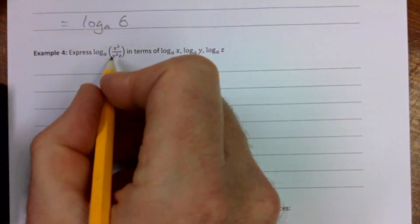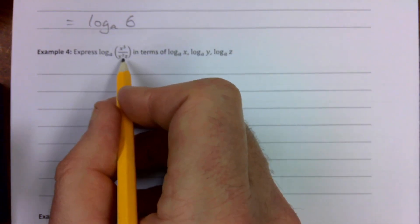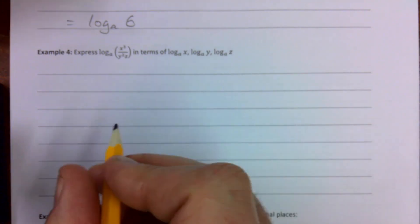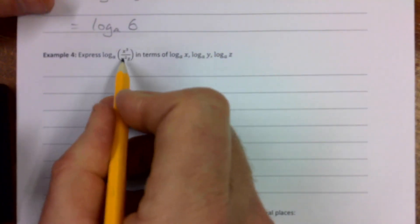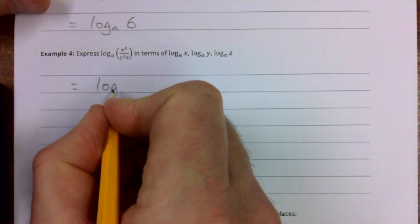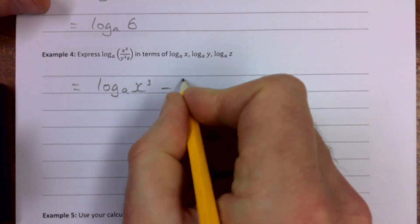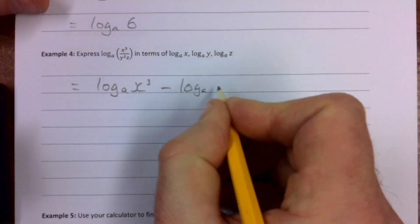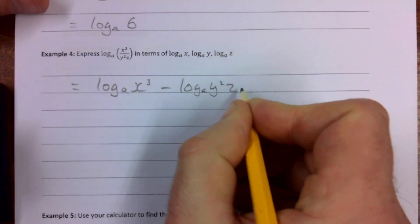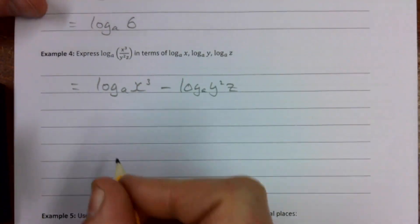Express log to the base a of x cubed over y squared z in terms of log to the base a of that. So let's start to separate these out. That division means we can separate it out and do a subtraction. So that's the same as log to the base a of x cubed minus log to the base a of y squared z. It's using our second law of logs backwards effectively.